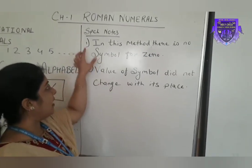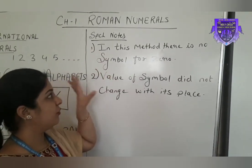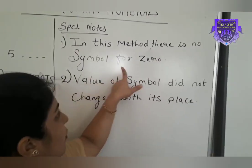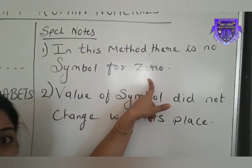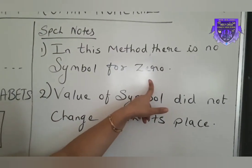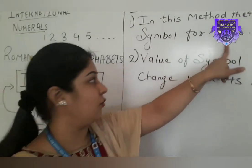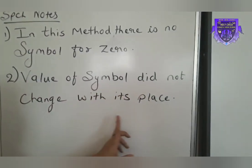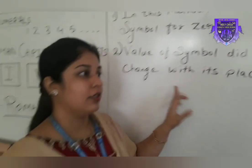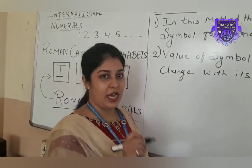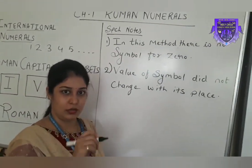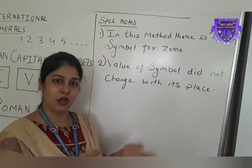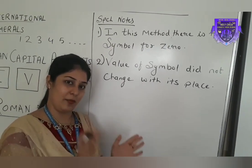In this chapter, we are learning two special points. First, in this method, there is no symbol for 0. Means we are not using any symbol for 0. Second, the value of a symbol does not change with its position. Suppose we are using the symbol I — whether written on the left side or right side, its value will be the same: 1.